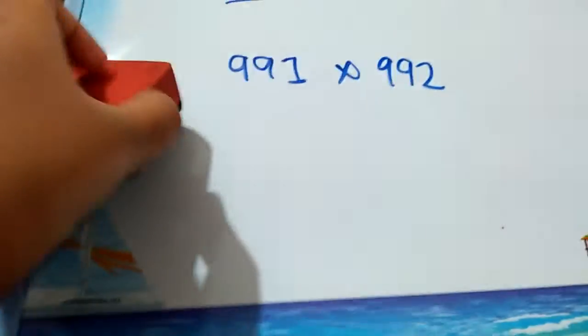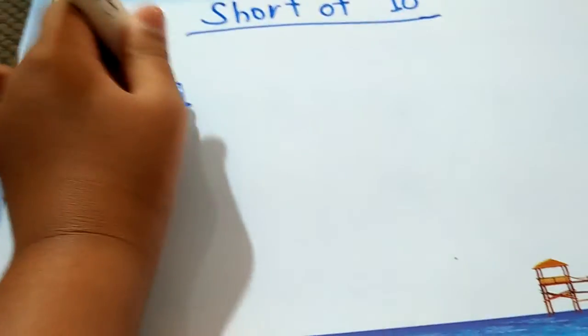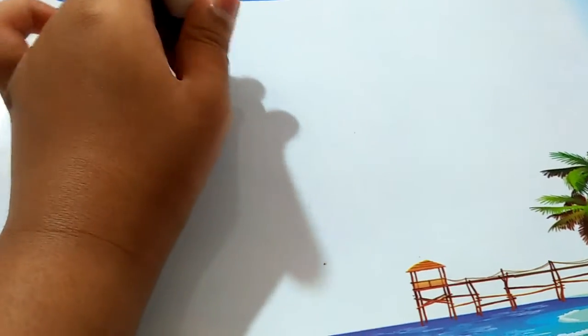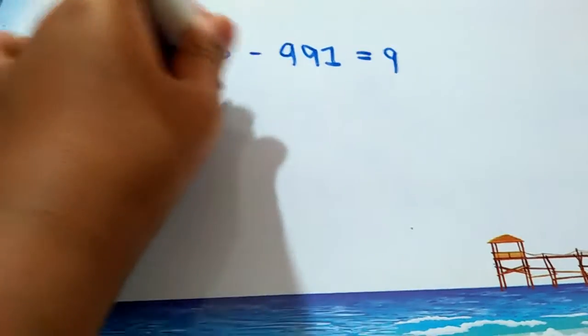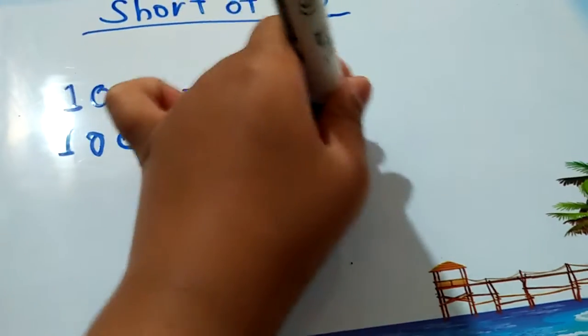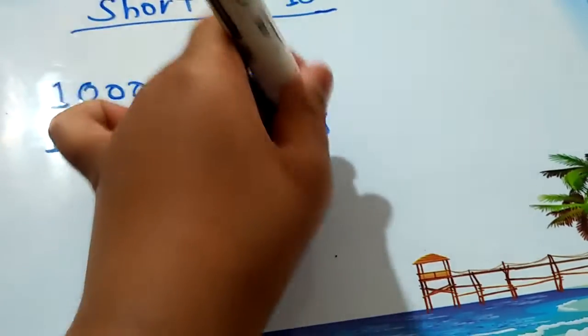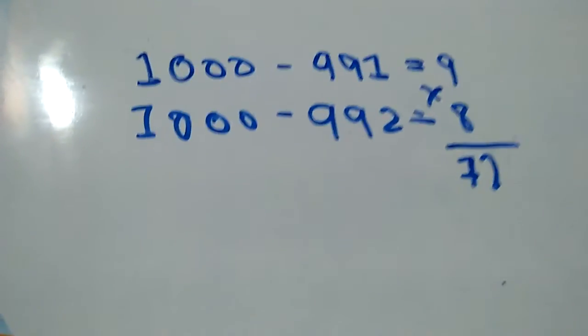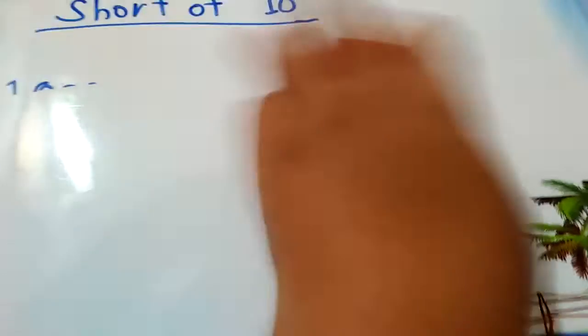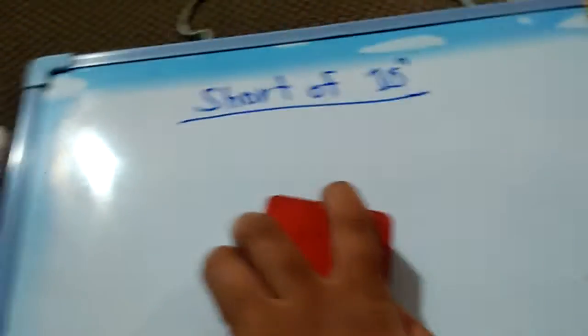Now how will you do this? You can take the short of 1000 minus, that is 9, and 1000 minus 992 is 8. So the product of both of them is 72. How about I give an easier example?